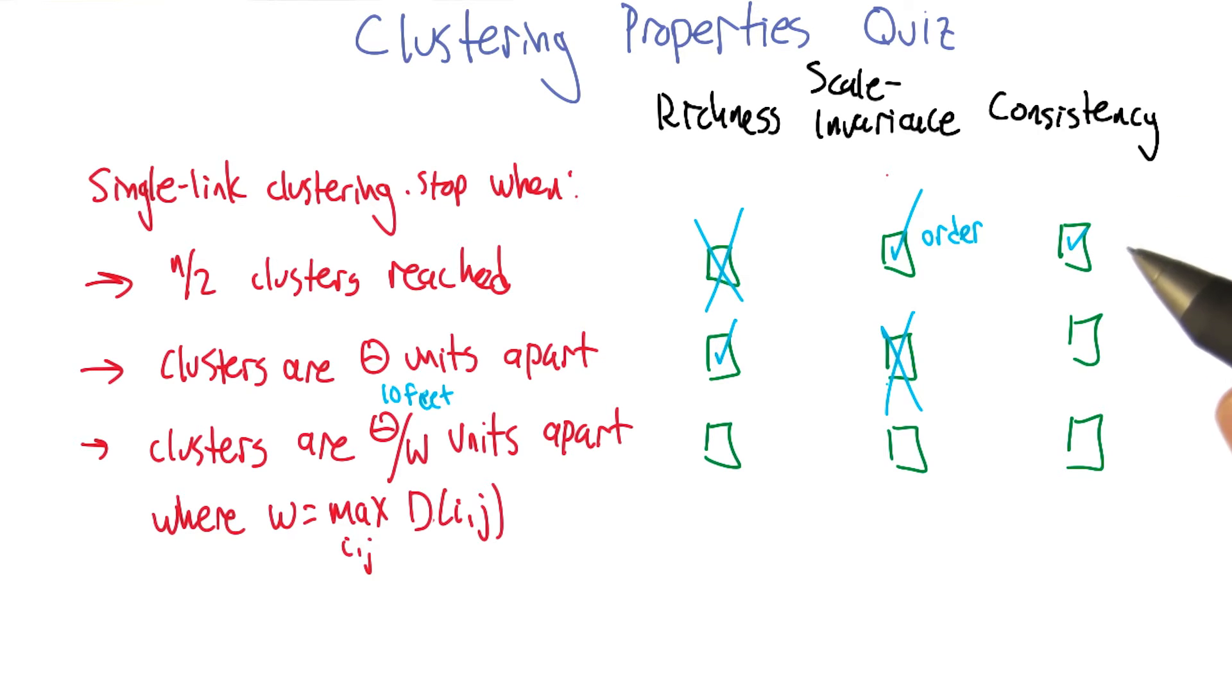Agreed. But the consistency argument still works because all the points that got clustered together, because they were within theta of each other, if I made them closer, would still be within theta of each other. And the ones that weren't clustered together, because they were more than theta apart, would now be even more than theta apart. And so you do get consistency. Agreed. Excellent. Okay. All right.